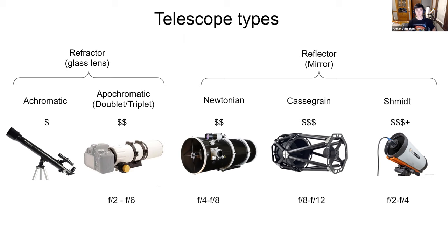From the previous workshop, one key thing to know is the different types of telescopes. There are refractors and reflectors. The two main types of refractors are achromatic and apochromatic — apochromatic ones have corrected chromatic aberrations. The three main types of reflectors are Newtonian, Cassegrain, and Schmidt. For beginner astrophotography, I recommend the apochromatic refractor. Reflectors have big aperture but are really heavy, requiring expensive equatorial mounts. Apochromatic refractors are robust and don't need collimation like Newtonians.